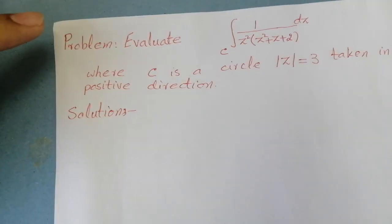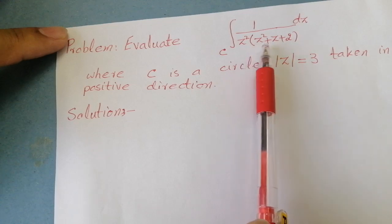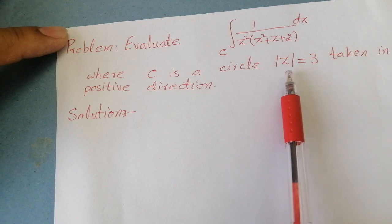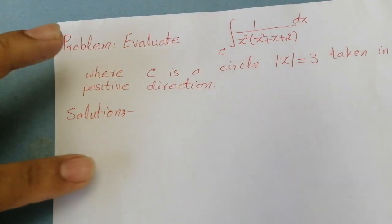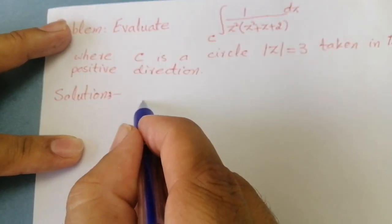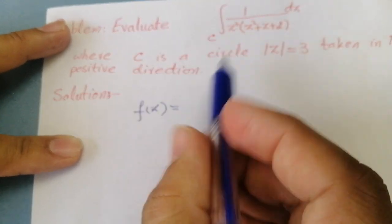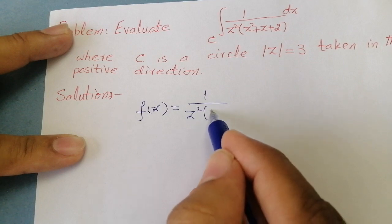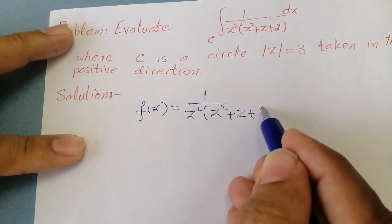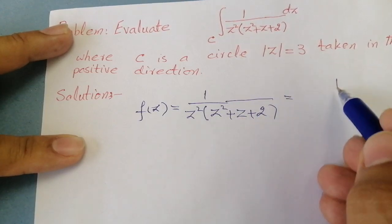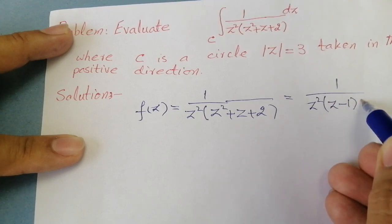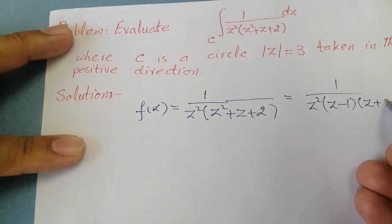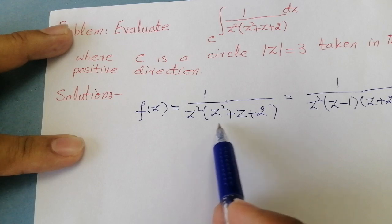Now let us apply this theorem to an instructed problem. In this problem, we have to evaluate the integral of 1 over z² times (z² + z + 2), where C is a circle of a given form. The function f(z) is equal to 1 over z² times (z² + z + 2), which after factorizing becomes 1 over z² times (z − 1) times (z + 2).